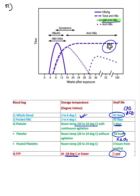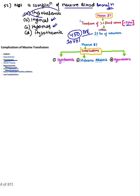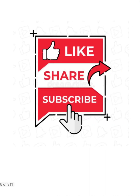A graph on IgM type was shown — already discussed. Then: not a complication of massive blood transfusion? Massive transfusion is transfusing more than one blood volume — more than 10 units of pRBCs. Complications include hypocalcemia, hypomagnesemia, and hypothermia. Hyperkalemia is more likely due to RBC lysis; hypokalemia is less likely and seems to be the answer for 'not a complication.'